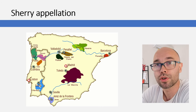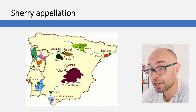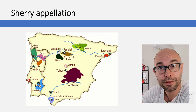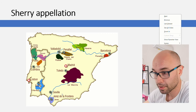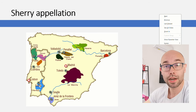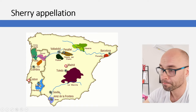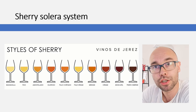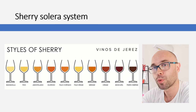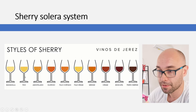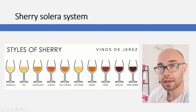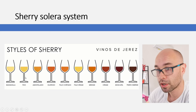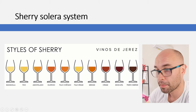Sherry only comes from Spain — from a very specific appellation around the town of Jerez de la Frontera in the south of Spain. There is a triangle area where sherry wine can be made. The main sherry styles you need to know are Fino, Amontillado, and Oloroso, plus Palo Cortado, Medium, Cream, and Pedro Jiménez. Note that Manzanilla and Palo Cortado are not mentioned in the WSET Level 2 book.